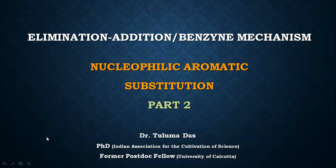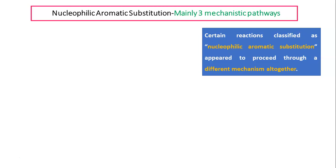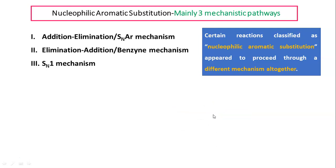This is Part 2 of nucleophilic aromatic substitution. In the last part we saw one mechanism. Today we will see another type. Nucleophilic aromatic substitution has three main mechanistic pathways. We have already seen one of them. Some reactions appear to proceed through a different mechanism altogether. Last time we covered addition-elimination, also called the SNAr mechanism. Today we focus on the reverse — elimination first then addition — also known as the benzyne mechanism. The third mechanism will be covered in another video.